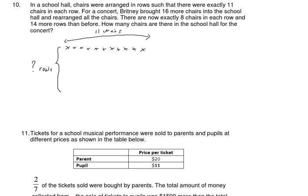For a concert, Britney brought 16 more chairs into the school and rearranged all the chairs. She decided to arrange all the chairs so the new arrangement has only 8 chairs in each row — 1, 2, 3, 4, 5, 6, 7, 8. You can see there's a difference in the new arrangement.